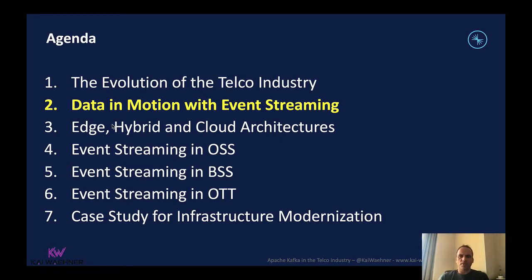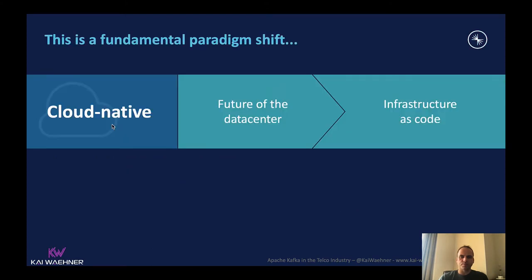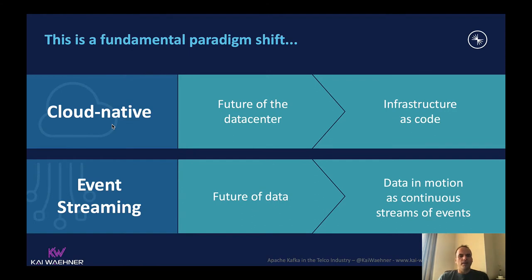This is the motivation for this talk — I want to introduce the concept of data in motion with event streaming and how it helps build new innovations in the telco industry. Cloud-native means the future infrastructure needs to be more elastic and scalable — and it doesn't mean everything has to run in the cloud; it can be on-premise or at the edge. Similarly, event streaming is the paradigm shift for data: instead of storing data at rest and analyzing it too late, we can now continuously process events in motion. Real-time data beats slow data in almost all use cases.